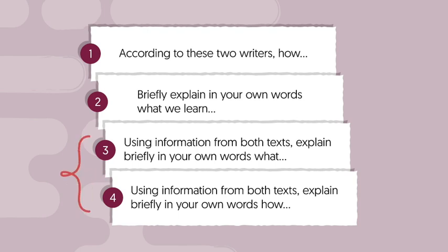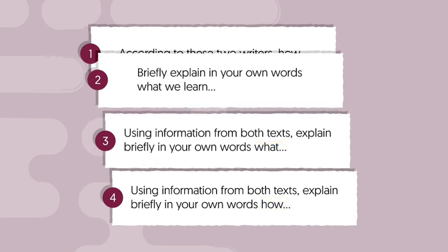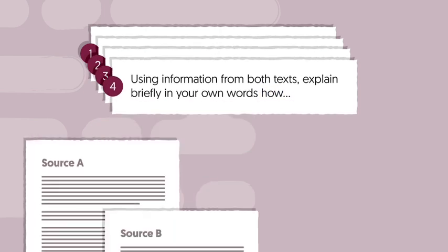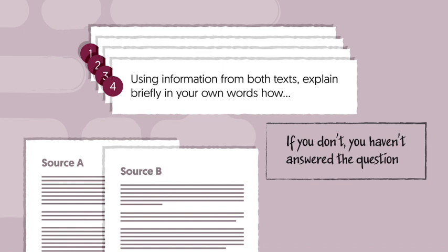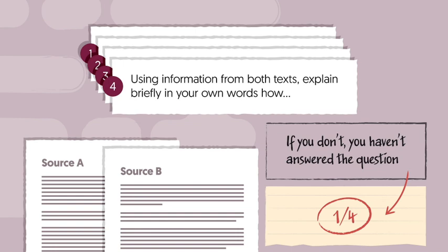Example 3 and 4 are pretty similar, with the exception of the W's, what and how. As you can see, you're required to use information from both Source A and Source B. If you don't, you haven't answered the question, and sadly, your marks will be limited to a band one response, or one out of potential four marks.